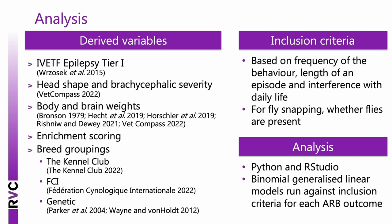For data analysis we included derived variables from other sources, including the International Veterinary Epilepsy Task Force Turing System to classify seizure severity, skull shape and brachycephalic severity from VetCompass, and body and brain weights of purebred dogs. An enrichment scoring chart was developed, with professionals from the dog behaviour industry scoring activities based on physical and cognitive enrichment. Breed groupings from the Kennel Club, FCI, and genetic breed groupings from previous studies were also included. Inclusion criteria ensured dogs met the ARB definition based on behaviour frequency, episode length, and interference with daily life. Data was cleaned in Python and analysed in RStudio using binomial generalised linear models.